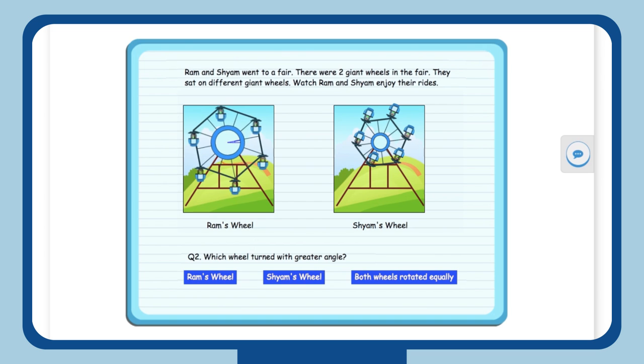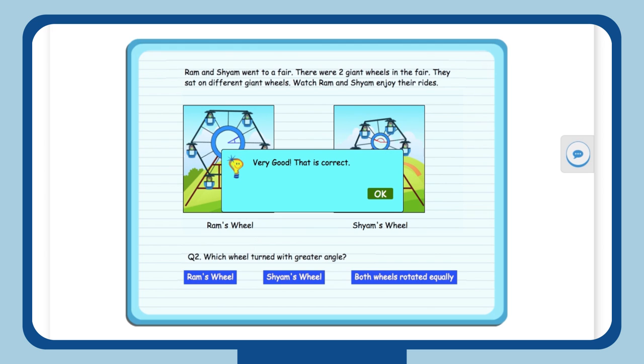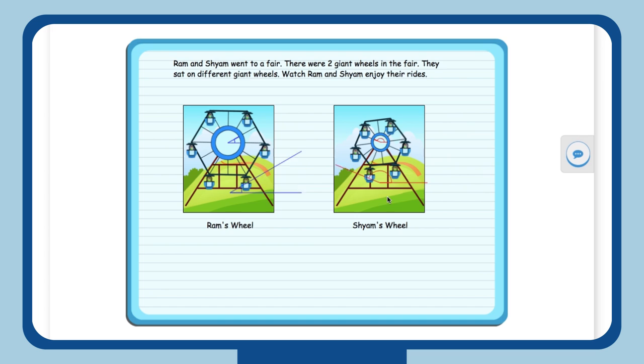Aarti is encouraged to attempt it again. She replays it and this time, it's a right answer. MindSpark, like every time, explains the answer. The angles overlap each other for Aarti to see why the answer is correct.